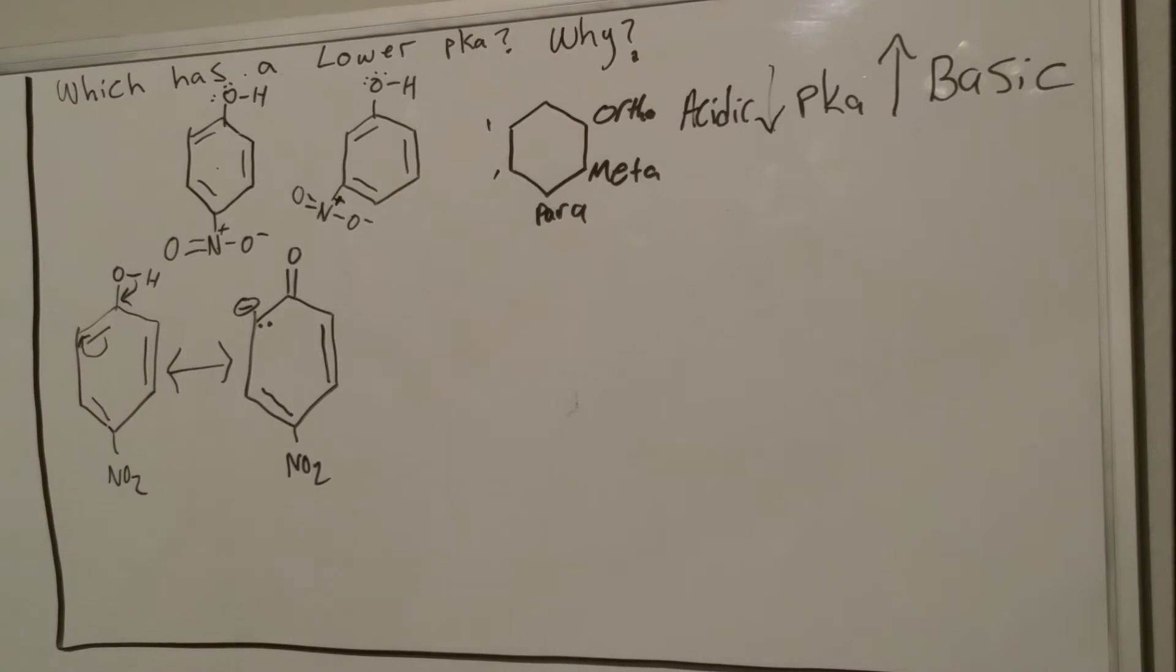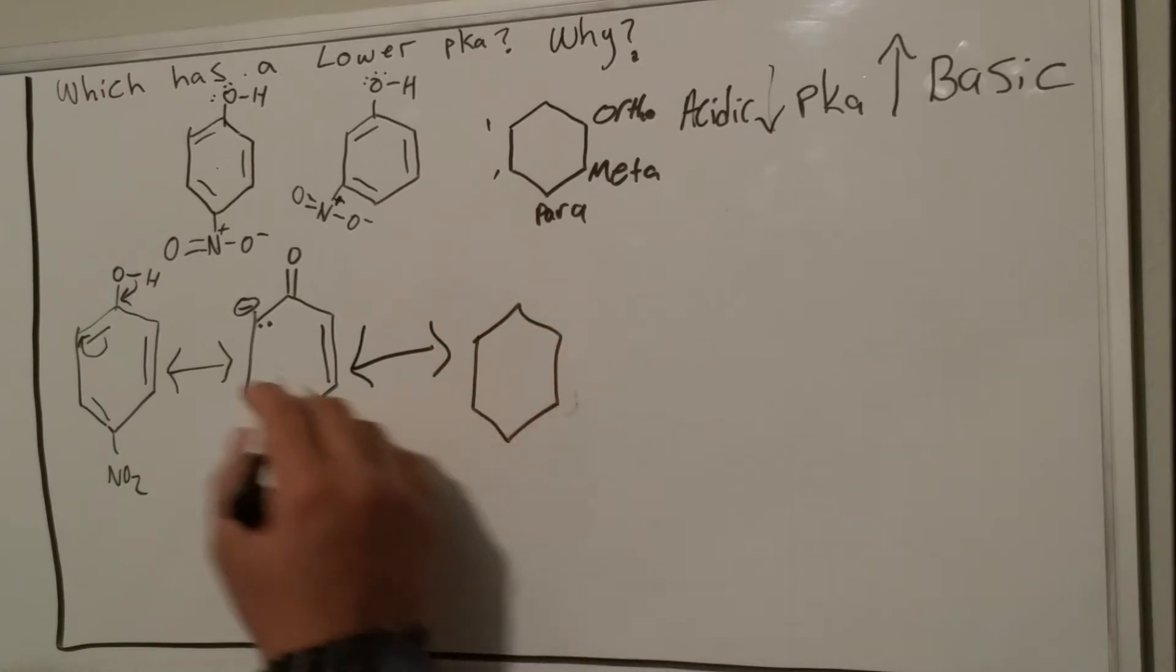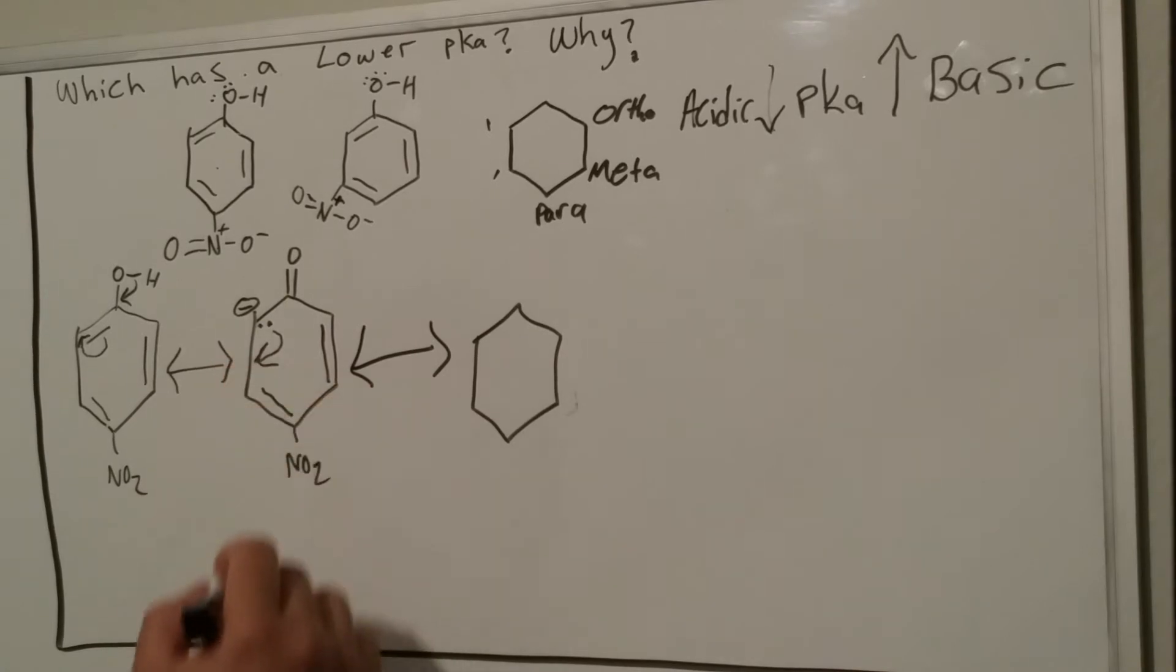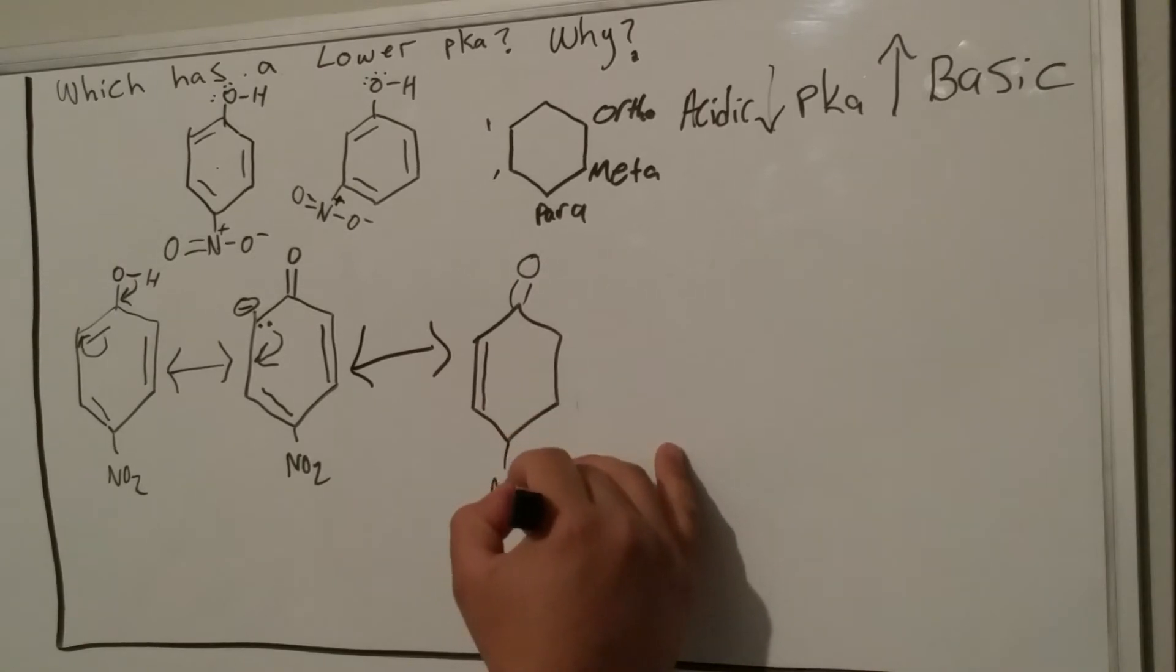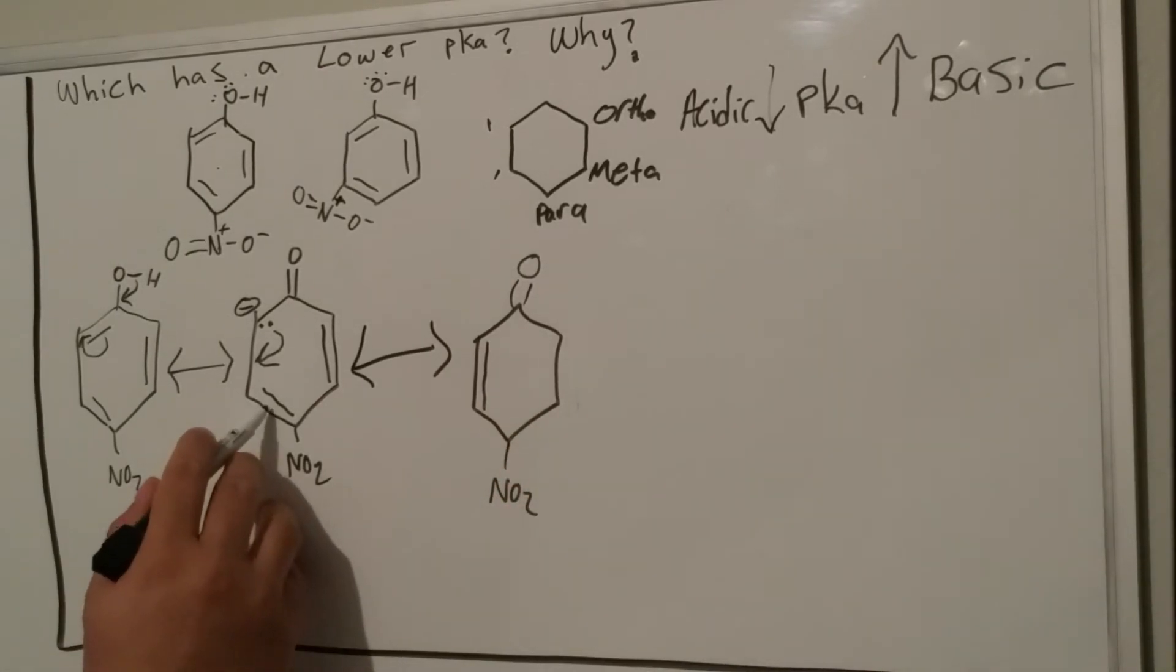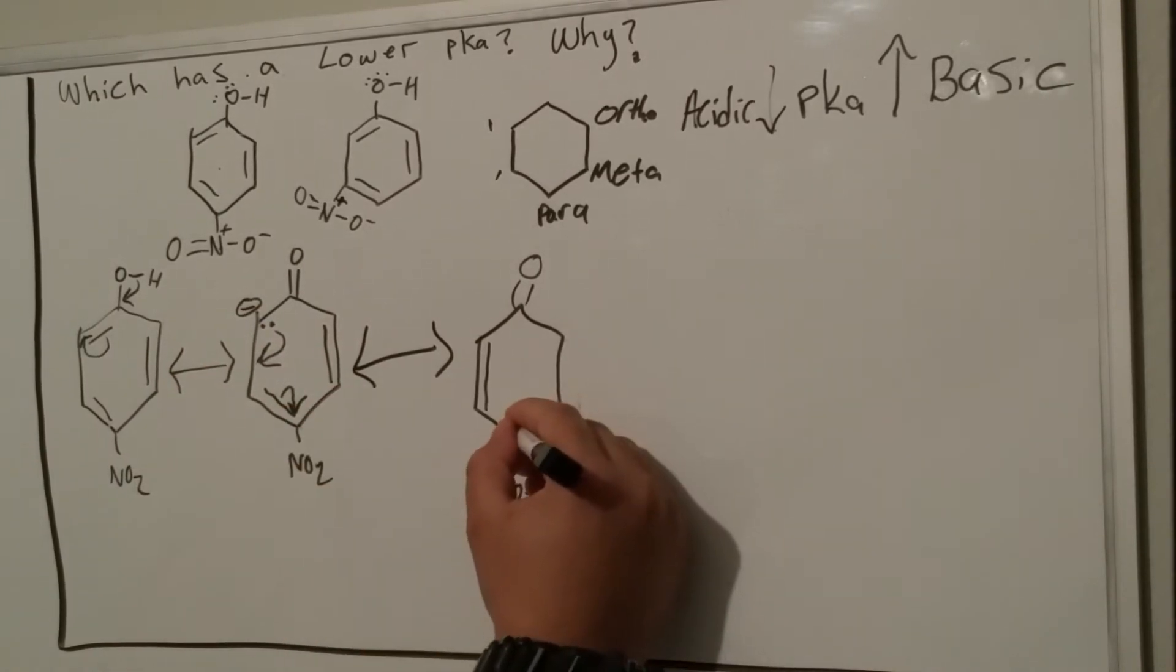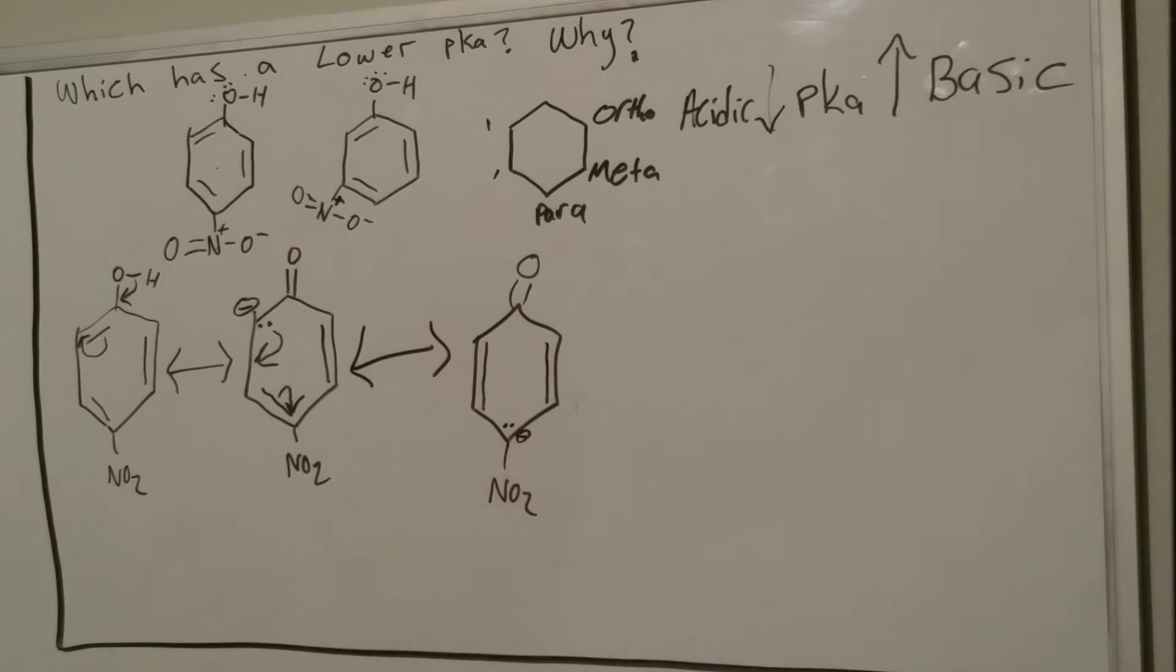The next step here is the lone pairs will create that double bond there, so it created a double bond. What happens to this one? Same thing as here. This gives the lone pair to that carbon here, so now we have a lone pair here, this carbon has negative charge.